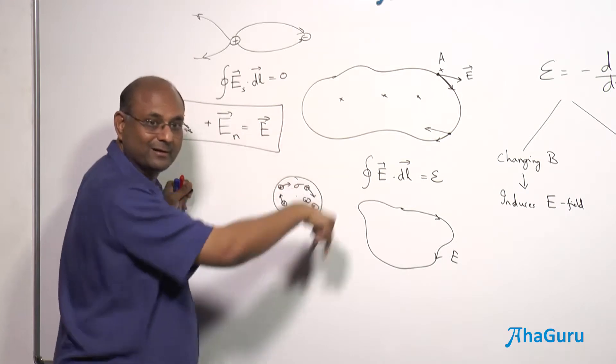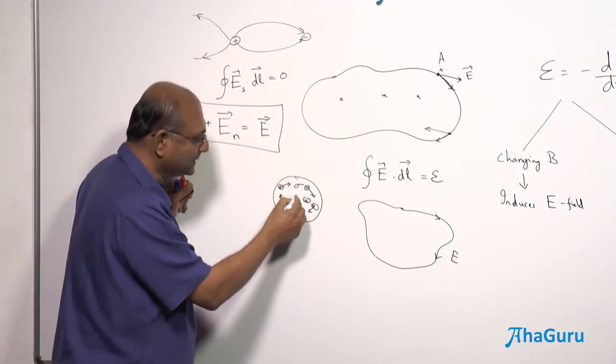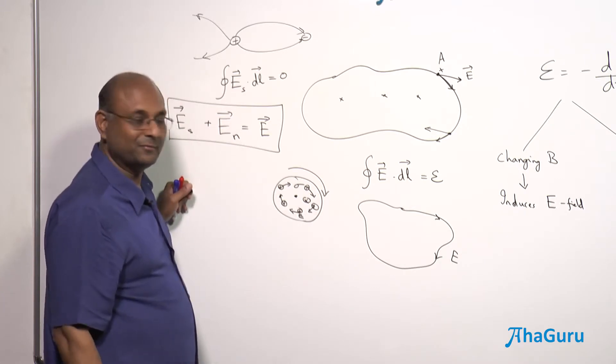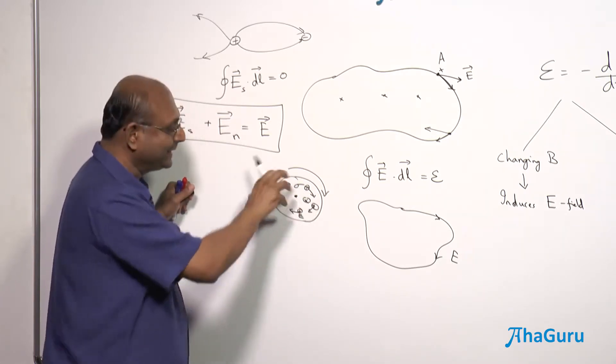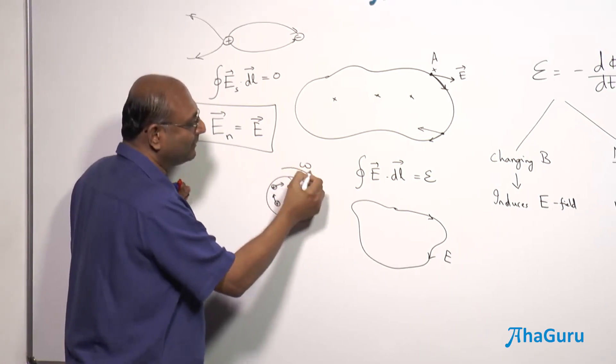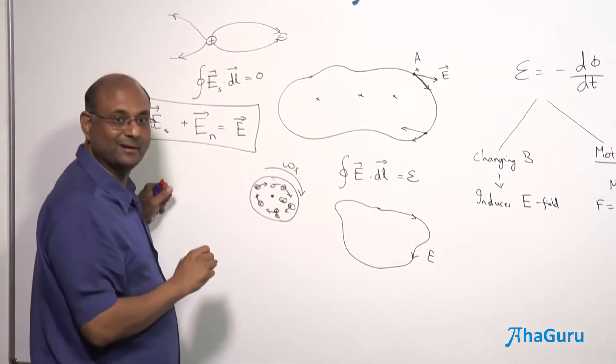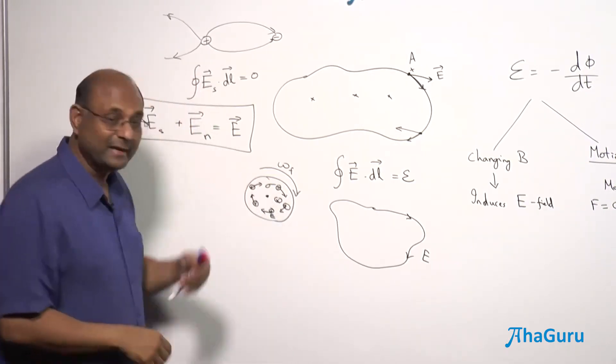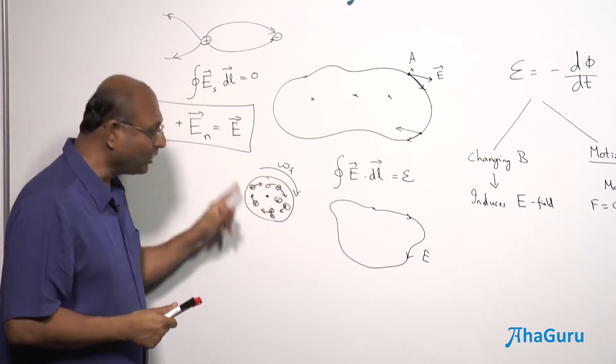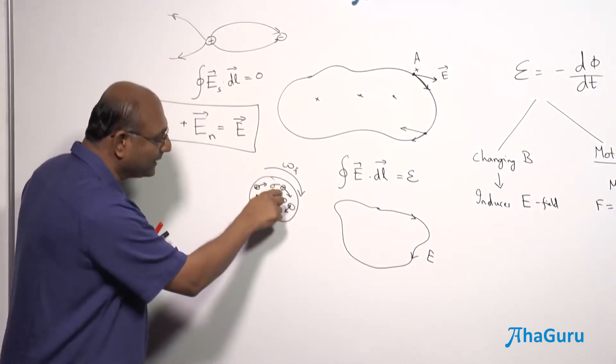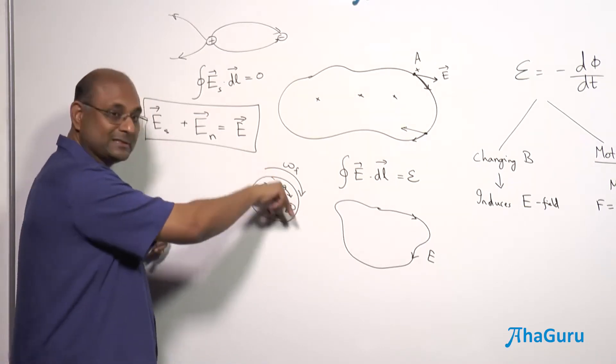And if this whole thing was free to rotate, this will start rotating with an angular acceleration. And by the time I switch off the entire field, it is going to end up with an angular velocity, omega final. And the question can be, what is the angular velocity? In fact, we will do questions of this kind. But before we can even do something like this, I need to know how to calculate the electric field.